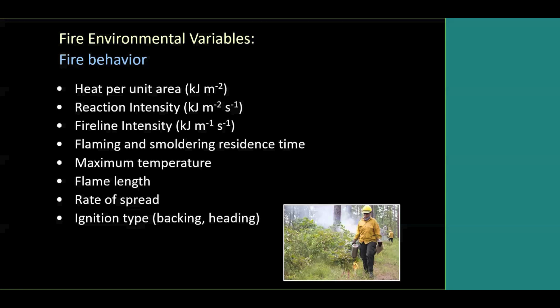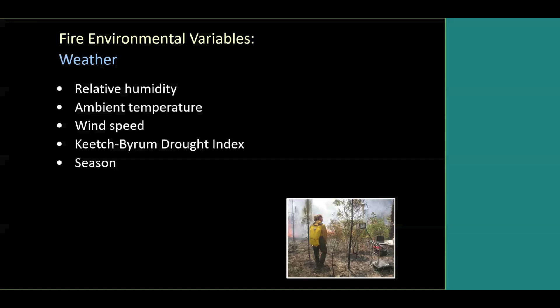Some variables are observational like flame length, but otherwise we used very thin thermocouple wires to measure flaming residence time, and rates of spread between points when we lit fires, mostly in research plots, to make all these calculations. We measured fuel before and after the fire to estimate fuel consumption, and from those calculated heat per unit area, reaction intensity, and fire line intensity. We split burns between backfires and headfires. Fire environmental variables included relative humidity, ambient temperature, and the Keetch-Byram Drought Index. We spread the fires from January into June, covering the typical fire season for prescribed burning in the southeast.